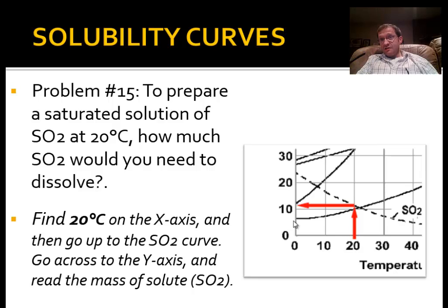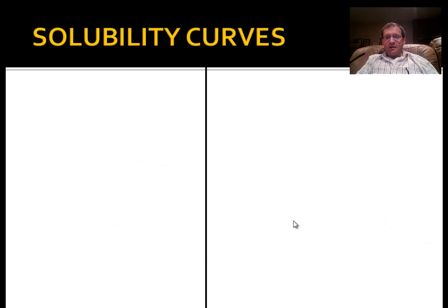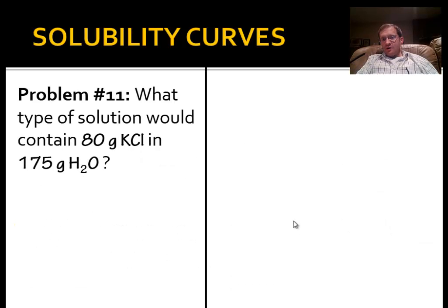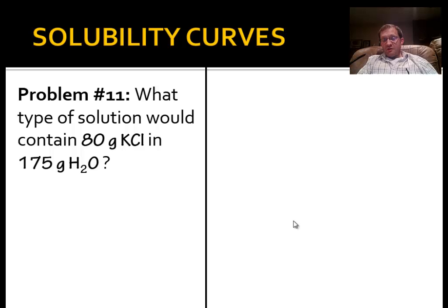Anything above 100°C and you'd be trying to dissolve it into steam, which doesn't work either. So we keep water between 0 and 100 degrees when we want to use it as a solvent. One other kind of question is number 11 — it asks what kind of solution would contain 80 grams of KCl in 175 grams of water.